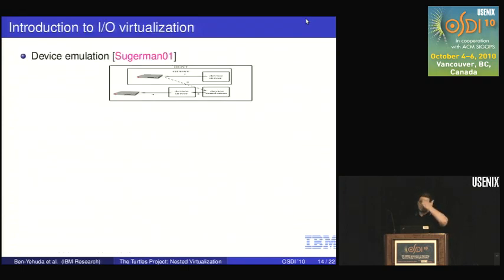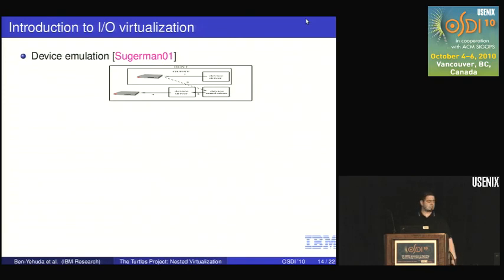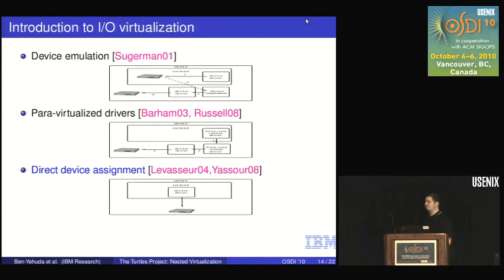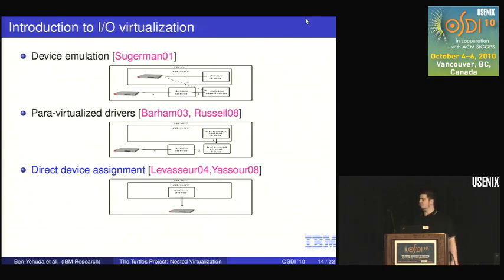Let's talk about I/O virtualization. There are three fundamental ways to give a virtual machine I/O access: device emulation, which is common but has extremely poor performance; para-virtualized drivers that know they're on a hypervisor, which give better performance; and direct device assignment, where you give the virtual machine direct access to the real I/O device, bypassing the hypervisor entirely, giving the best performance. To do device assignment safely, you need an IOMMU.